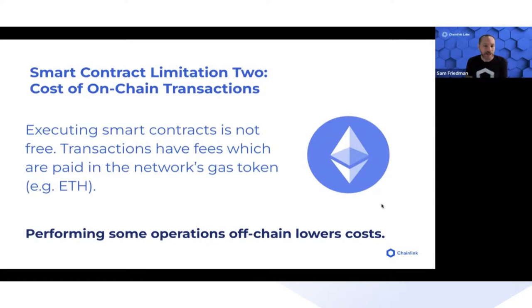On some chains that can be expensive, and even on low gas fee chains, frequent executions can add up to a lot of cost. Chainlink Automation solves this problem with off-chain computation.